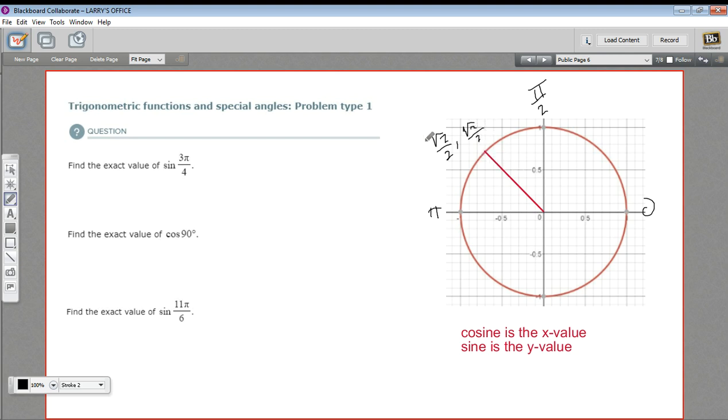In this case, the x-value is going to be negative and the y-value is going to be positive. So our coordinate here at 3π/4 is (-√2/2, √2/2). Now the sine is the y-value, so our answer is just this part. This equals √2/2.